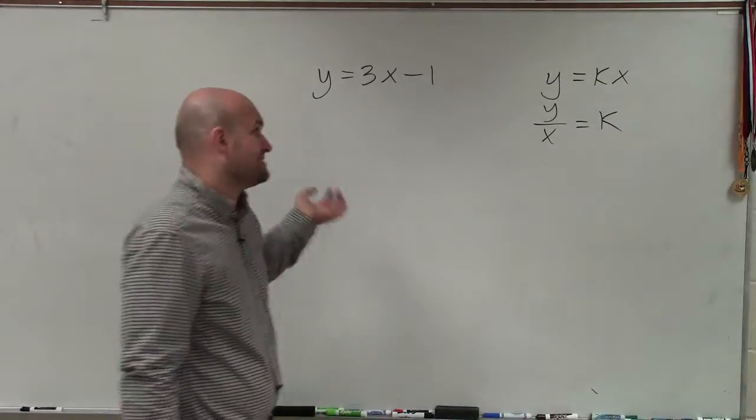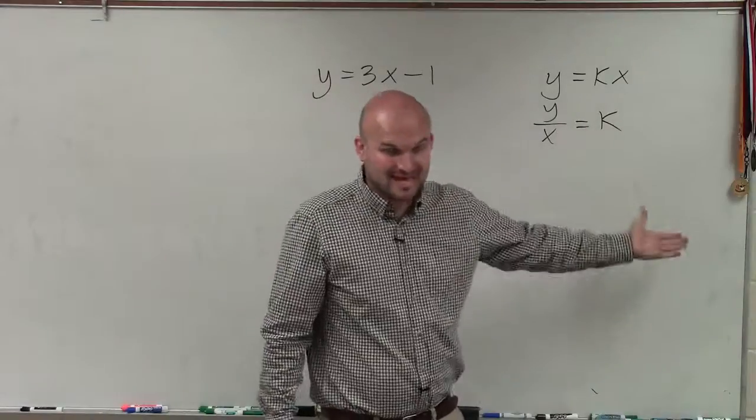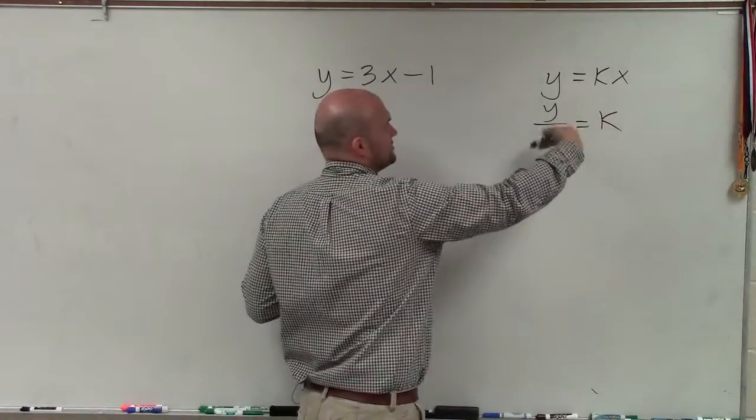Now, remember, for it to be an example of direct variation, we have to be able to write it in the form of y equals kx or y over x equals k. In this case, you can see for these two equations, there is no addition or subtraction.